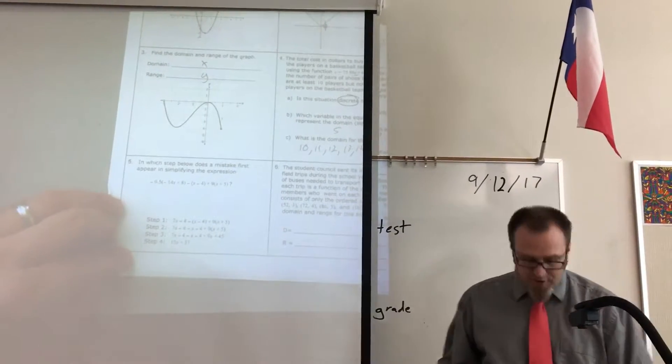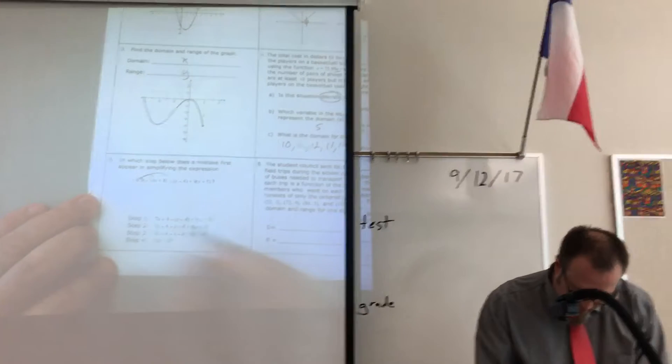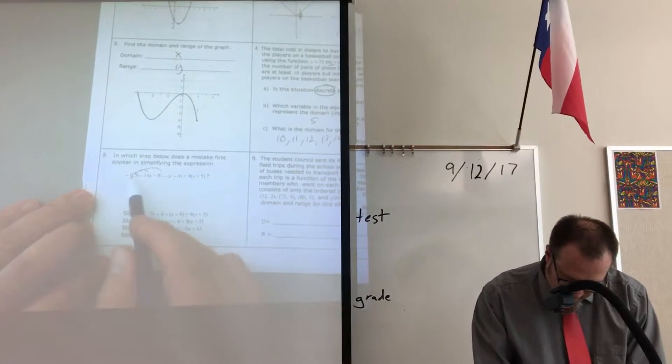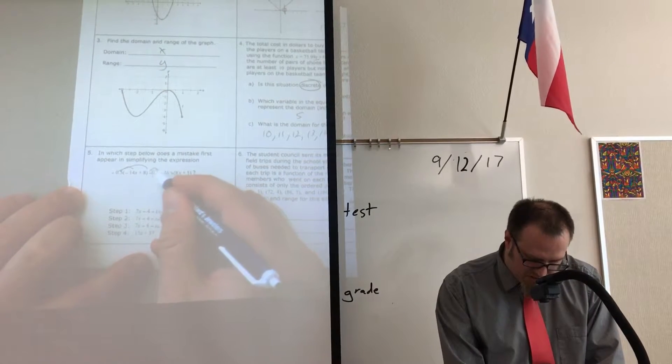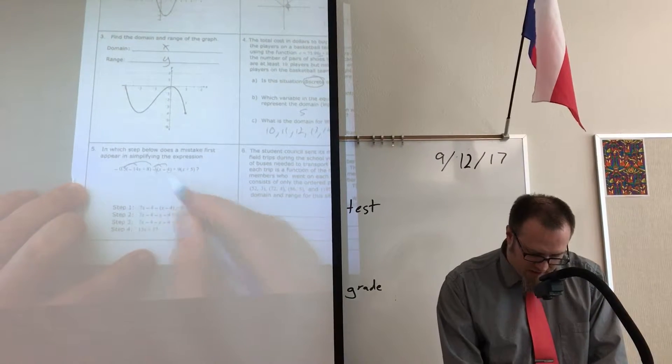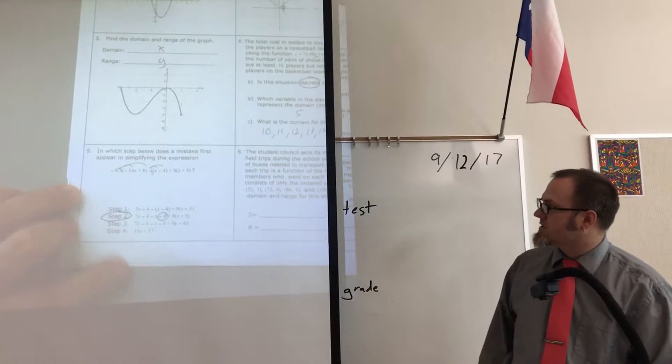Number five, the first mistake. They're distributing here. We have a negative times a negative, it's a positive. A negative times a positive, it's a negative, so step one is okay. The next one is distributing this. A negative times a negative should be a positive, so step two is where that first mistake starts showing up.